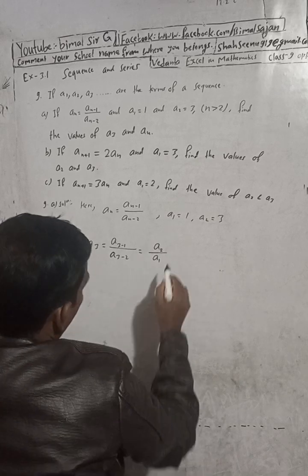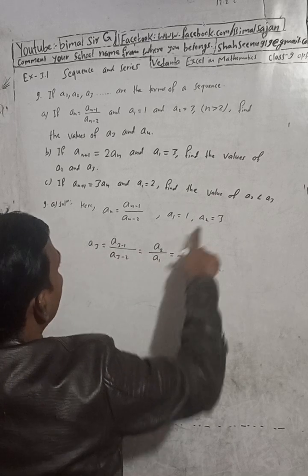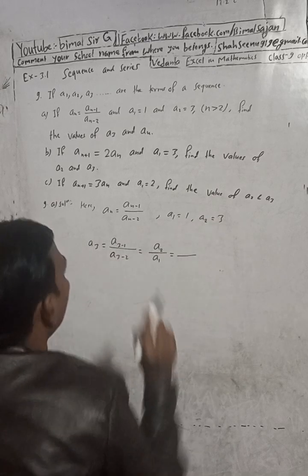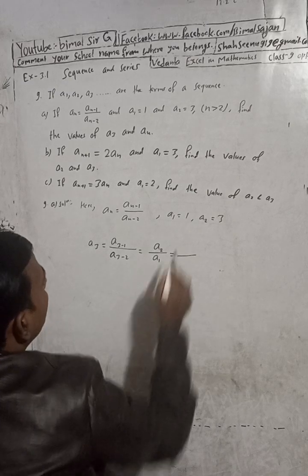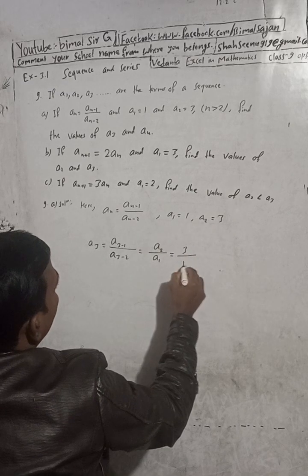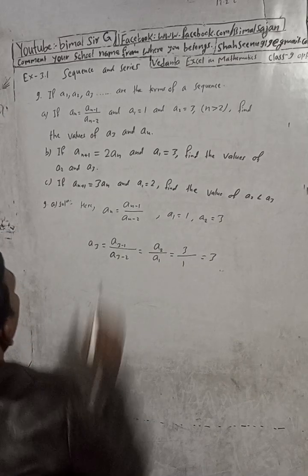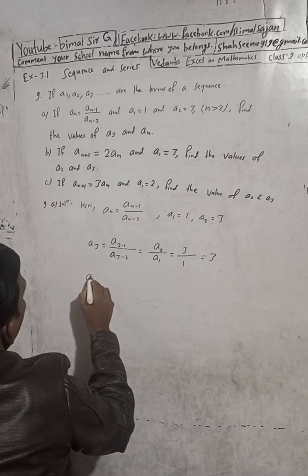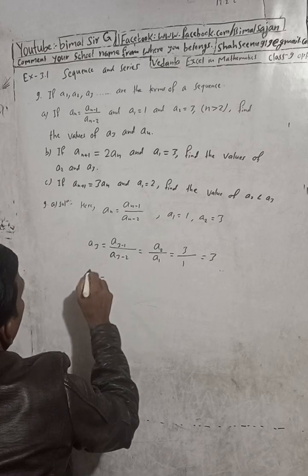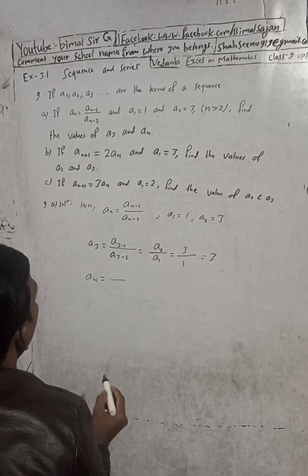So a3 is equal to a2 divided by a1. a2 value is 3 and a1 value is 1, so 3 divided by 1 equals 3. Therefore a3 equals 3.